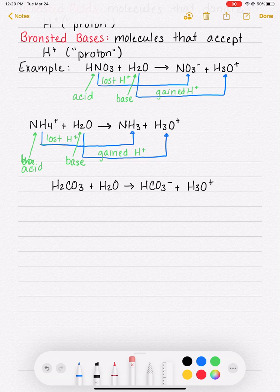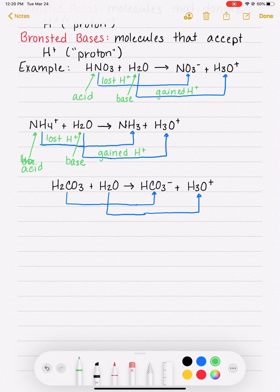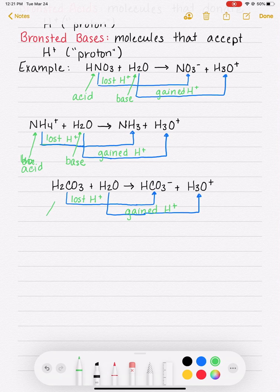Start by finding the product and the reactant pairs. H2CO3, what does it look the most like? H2CO3 versus HCO3- or H3O+? H2CO3 and HCO3-, they have the most in common. H2O and H3O+ match up. Again, we're just looking for pairs that are very similar. How did H2CO3 become HCO3-? It lost a hydrogen and it lost a positive charge. H2O gained a hydrogen and a positive charge. The thing that loses the hydrogen is the acid, the one that gains the hydrogen is the base.